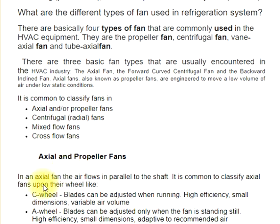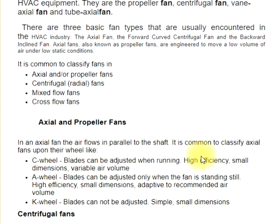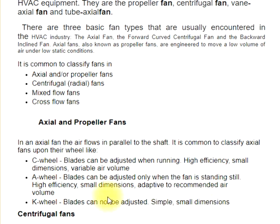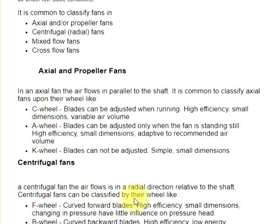Axial fans are classified by their wheel type. The C wheel has blades that can be adjusted when running, offering high efficiency and small dimensions for variable air volume. The A wheel has blades that can be adjusted only when the fan is standing still, also offering high efficiency and small dimensions, adaptive to recommended air volume. The K wheel has blades that cannot be adjusted — simple with small dimensions.